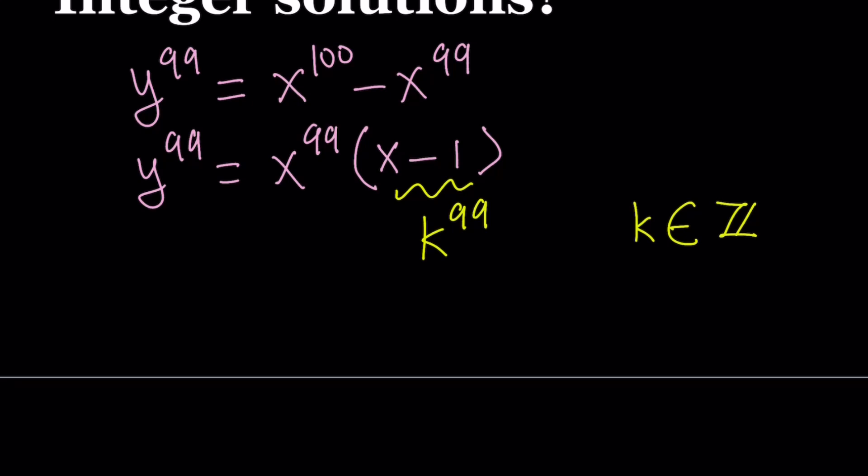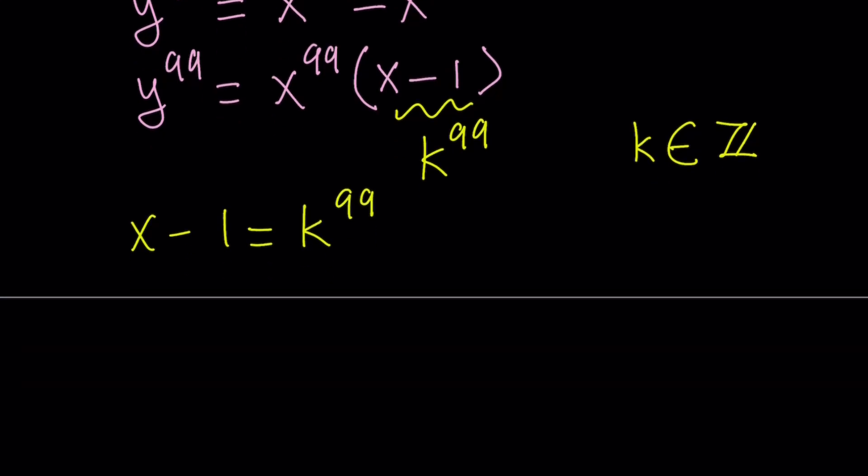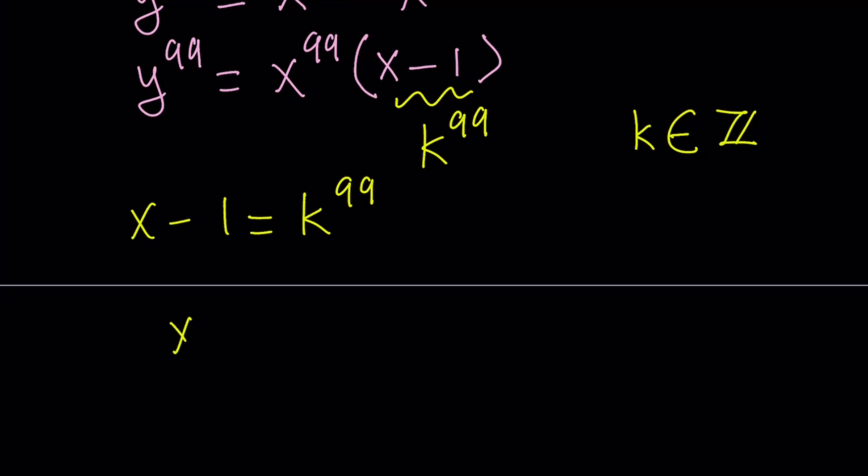What did we say x minus 1 was? We said x minus 1 was k to the power 99, where k is an integer. So we can just add 1 to both sides, that simple, and write the x as k to the power 99 plus 1. Wow, that was easy, right? Hopefully. So that's x, and k is an integer.